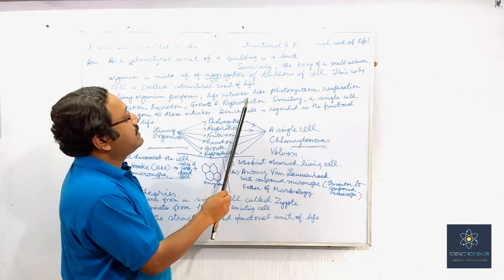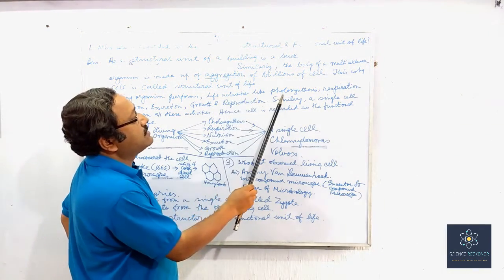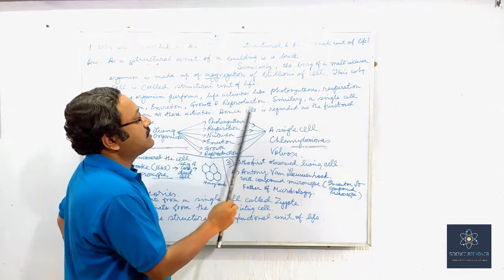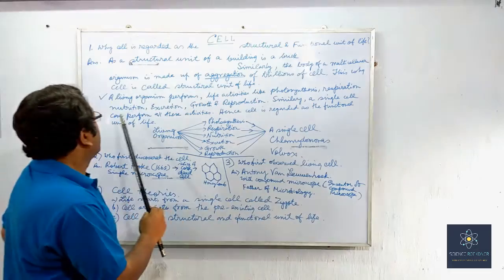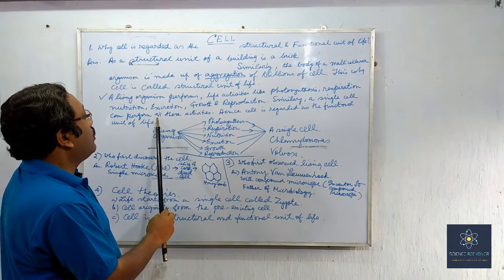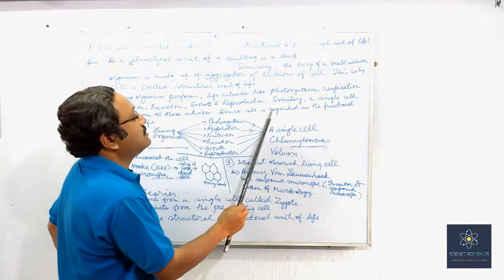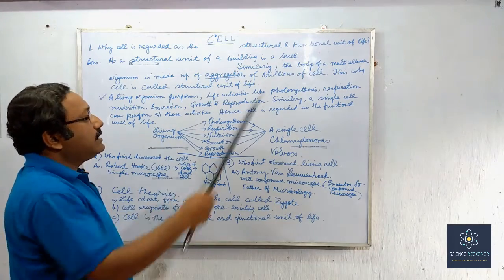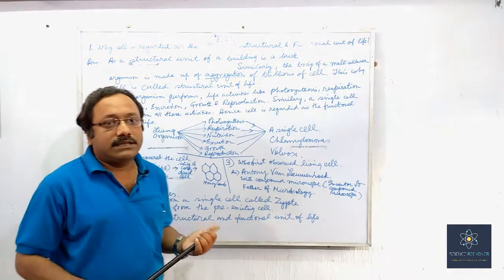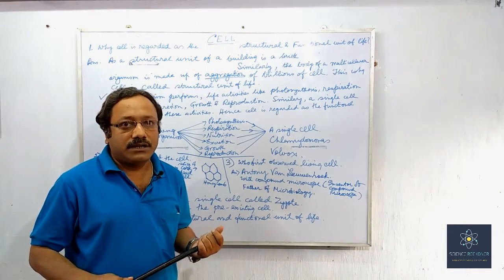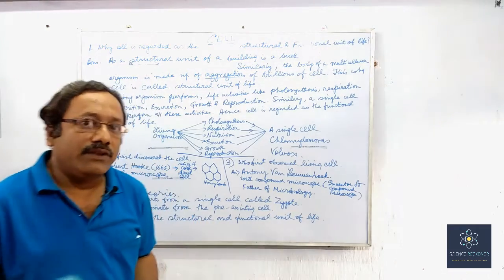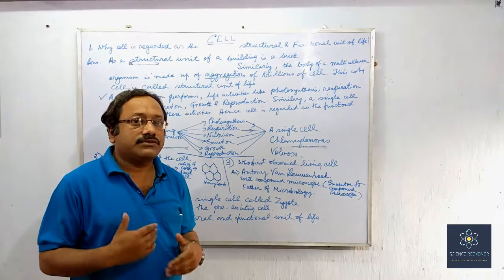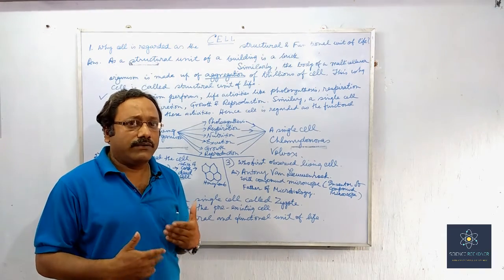A living organism performs life activities like photosynthesis, respiration, nutrition, excretion, growth, and reproduction. Similarly, a single cell can perform all these activities — hence the cell is regarded as the functional unit of life. Altogether, the cell is called the structural and functional unit of life. So this is the definition: cell is the structural and functional unit of life.